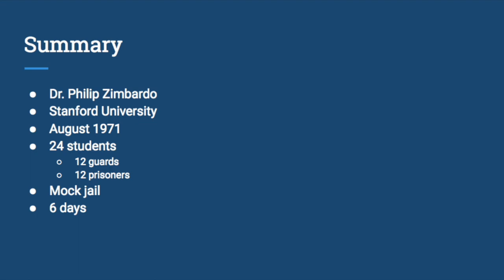24 students, physically and psychologically healthy, were selected to participate in the experiment. Of those 24, 12 were randomly assigned as prisoners and the other 12 as guards. A mock prison was built in a part of the school where the prisoners were held in cells for 24 hours a day over an expected two-week time period while the guards rotated out.